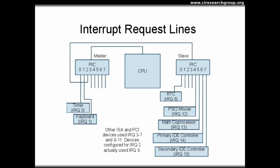The old programmable interrupt controller actually consisted of two PIC chips attached to each other, with one of the chips being attached to the CPU. The so-called master chip was the one attached to the CPU, and pin 2 of that master chip was attached to a slave chip. Each pin on each of the two chips allows for 16 interrupt numbers to be created — interrupts 0 through 7 correspond to the pins of the master chip, and interrupts 8 through 15 correspond to the pins of the slave chip. Since pin 2 of the master chip handles the slave chip, the master PIC only supports an effective 7 interrupts, so there are only 15 usable interrupt hardware lines for devices.